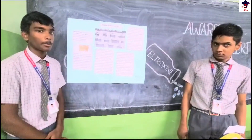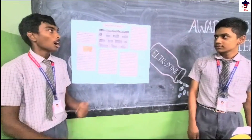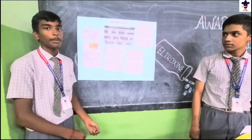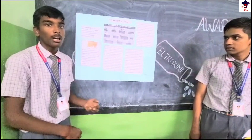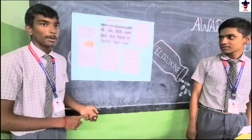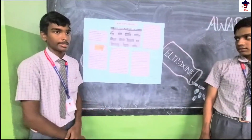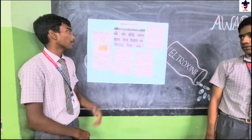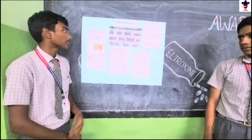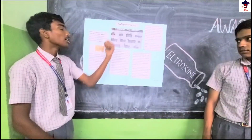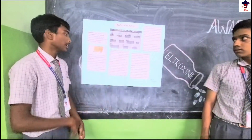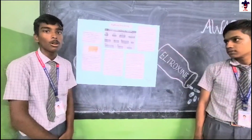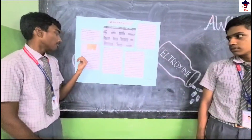Good morning to all. I am Kalemannan from 10-B. I am here to explain about my topic, radiocarbon dating. Radiocarbon dating is the method of determining the age of fossils, birds, animals, and trees using radioactive elements. This method was developed in the late 1940s at the University of Chicago by Willard Libby.